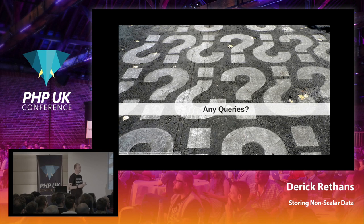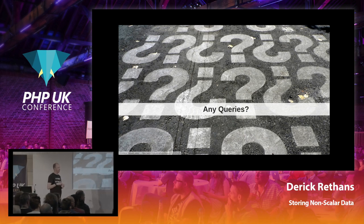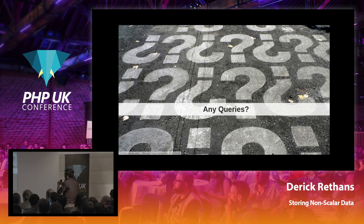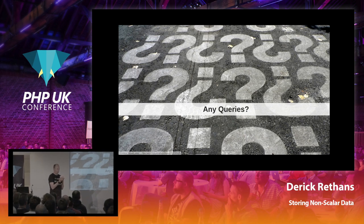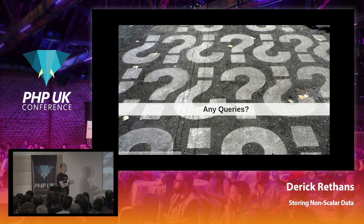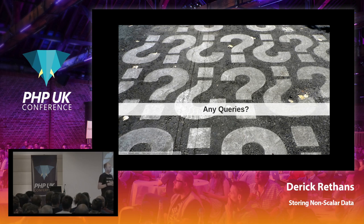Another question: if NoSQL has no defined schema and one JSON object might have a field called 'name' while another doesn't — can you create an index on 'name' and pull out everything that has it, ignoring those that don't? Yes. In MongoDB you can create a sparse index on a field, meaning any documents where that field doesn't exist simply don't show up in the index. Or you can make a non-sparse index where those fields show up but the value is null.